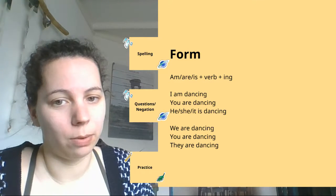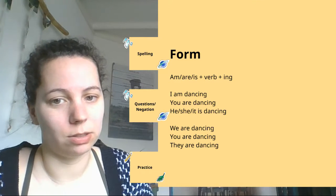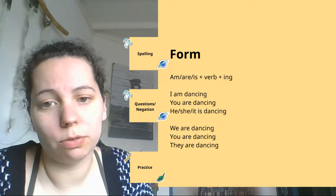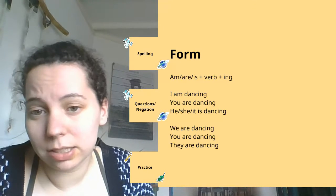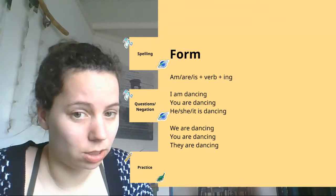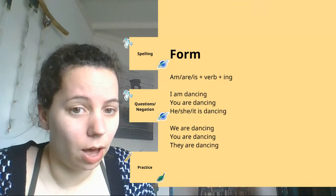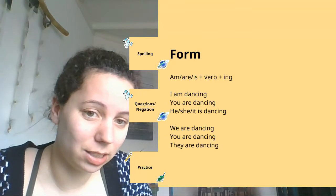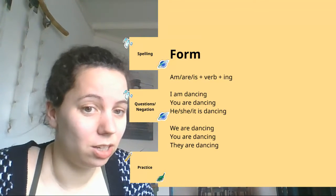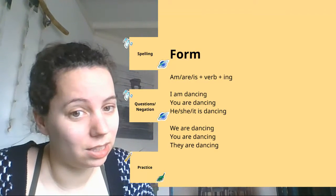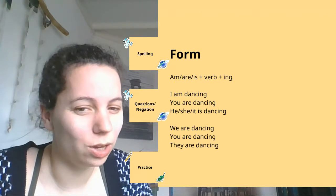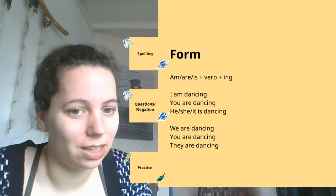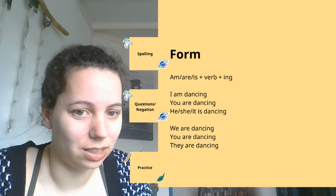So we have, for instance, if we conjugate — if we do the forms of 'to dance' in the present continuous: I am dancing, you are dancing, he, she, and it is dancing, we are dancing, you are dancing, and they are dancing.